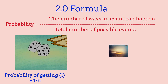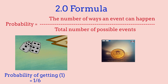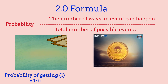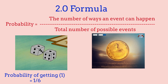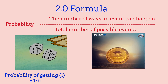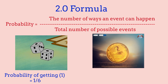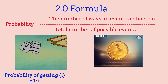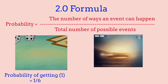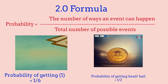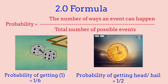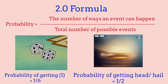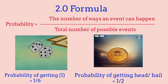Now let's look at another example for a coin. In a coin, there are two possible outcomes: to either get heads or to get tails, so it's a 50-50 chance. The number of ways an event can occur is 1, and the possible outcomes is 2, giving us 1 over 2. So these are just some quick examples of probability.